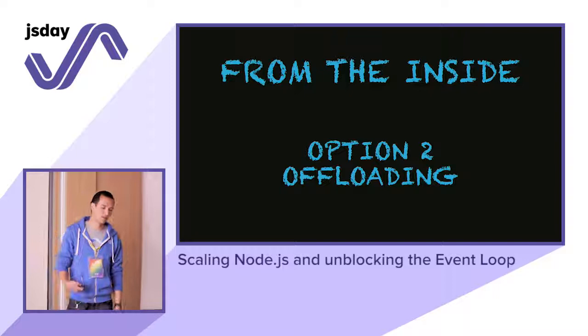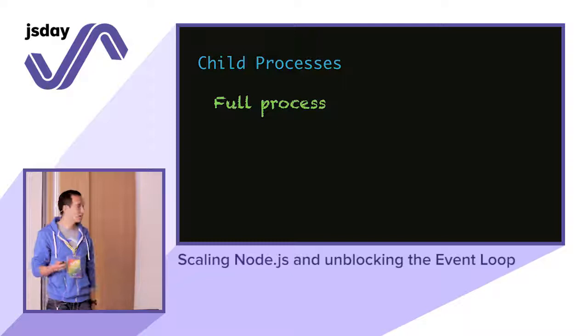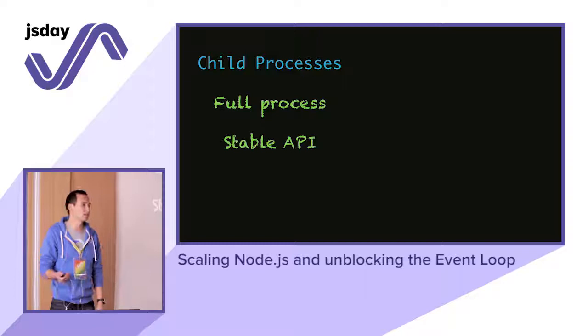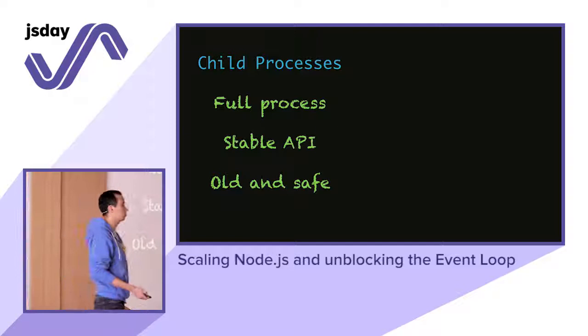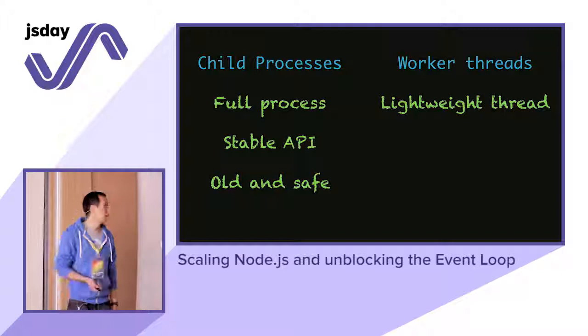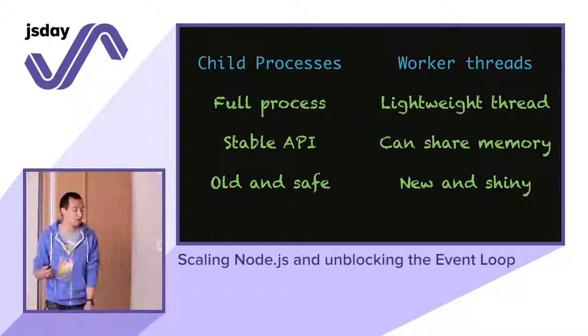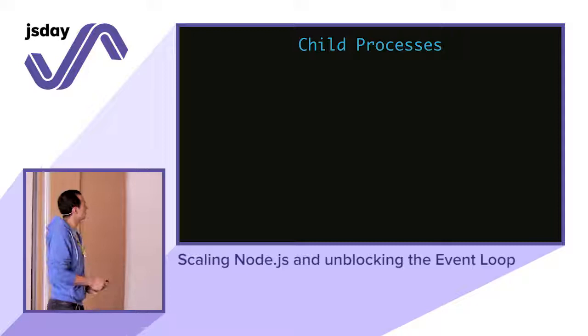How can we offload things in Node.js? We have the old, safe way: child processes. It's a full system process, has a stable API, been around since Node 0.10 — super old and safe. We can run any type of process. Then we have worker threads. Worker threads are still experimental but amazing. They are no longer behind a flag in Node 12 — in fact, from Node 11.7. They can share memory with the parent process through array buffers.